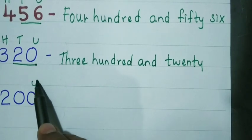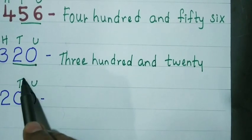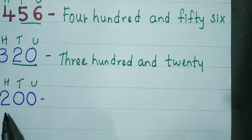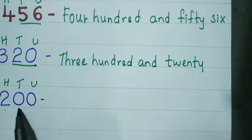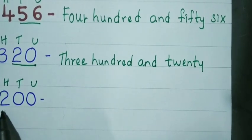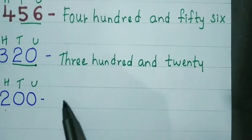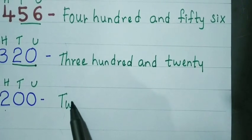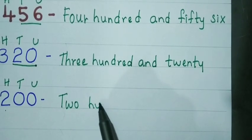300 and 50. Write the place value first: units, tens, hundreds. Here, 200 — there are no tens and units are also 0. So, 200.